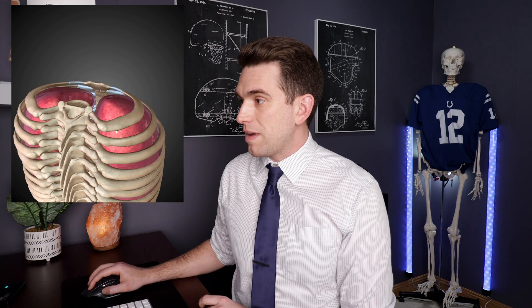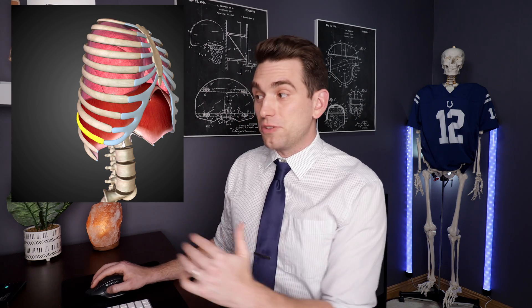The majority of our ribs have two articulation points. They start all the way back in the spine, articulating with the vertebral column, and then wrap around to insert onto the sternum or the breastbone. Ribs one through seven are what we consider true ribs, meaning they articulate with the vertebral column and the sternum in the front of the chest. Moving down lower, ribs eight, nine, and ten are considered false ribs because they don't directly articulate with the sternum — rather they're connected to costal cartilage that is then indirectly connected up to the lower portion of the sternum.